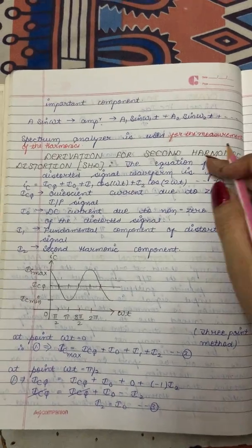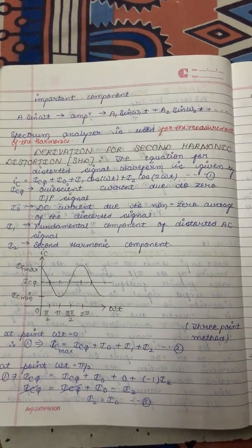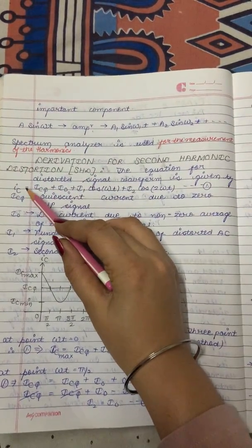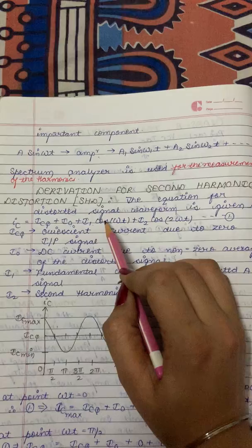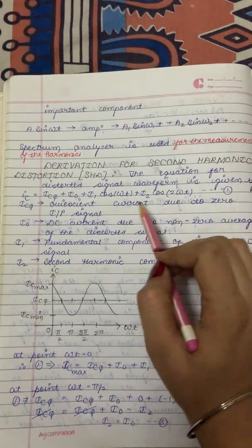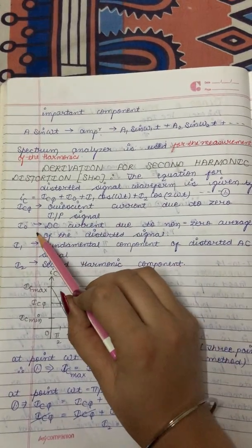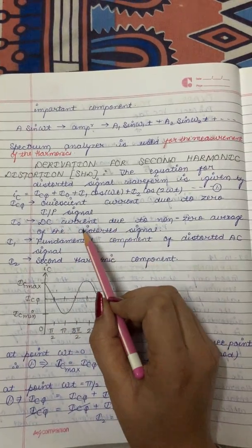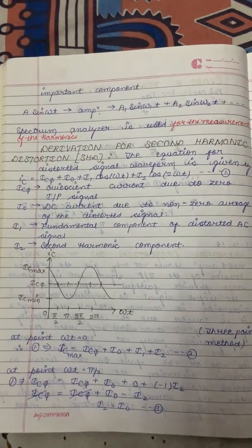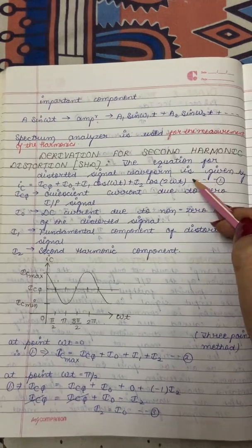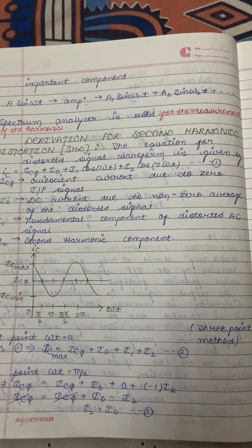Next we have the derivation for second harmonic distortion (SHD). The equation for the distorted signal waveform is given by: IC = ICQ + I₀ + I₁cos(ωt) + I₂cos(2ωt), where ICQ is the zero-input signal current, I₀ is the DC current due to the non-zero average of the distorted signal, I₁ is the fundamental component of the distorted AC signal, and I₂ is the second harmonic component. This is the main equation of the distorted signal waveform, and we will use the three-point method.